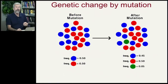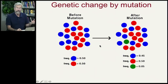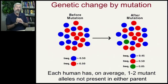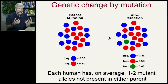We also get genetic change by mutation, and ultimately this is a source of all new forms of genetic material. A population may only have two alleles at a particular locus, but then one individual has a mistake during DNA replication — a novel mutation. Even though mutation rates are very low at any given locus, we have billions of base pairs, so each person has on average one or two mutant alleles not present in either parent. There is constant change and movement of genetic material within any population because of mutation.